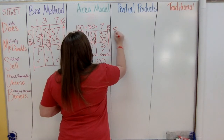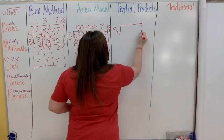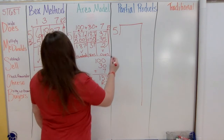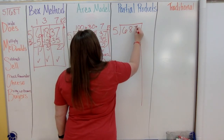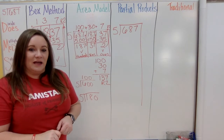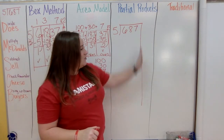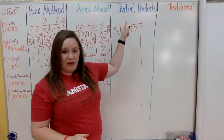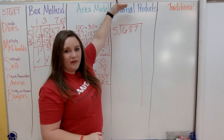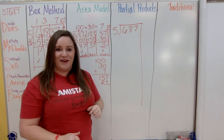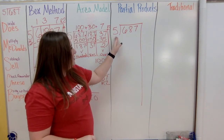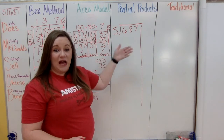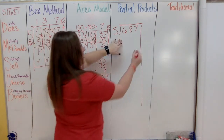Most teachers have students draw this in a particular way. You put 5 on the side, then draw a long line down the side, with 687 inside. Some teachers have students draw a long line and write the partial quotients on the side; others write them on top. Starting with hundreds: how many times can I take 5 out in hundreds? It's going to be 100 times.